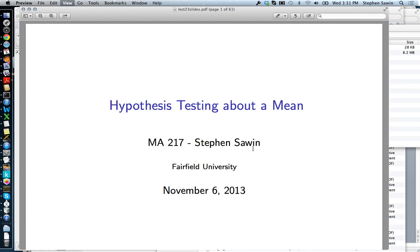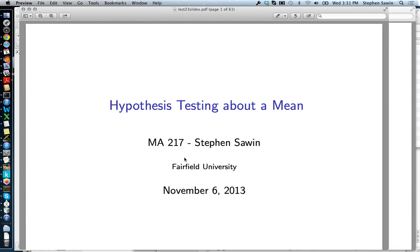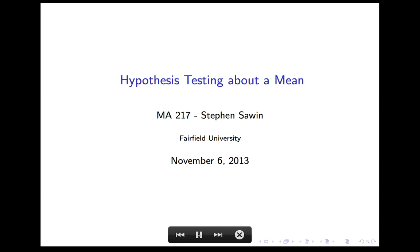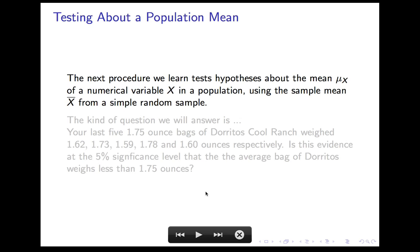Hypothesis testing about a mean. We've already learned how to test hypotheses about a proportion, so the logic here is going to be exactly the same. Calculations will be a little bit different. We're going to test hypotheses, claims, about the mean μ_X of a numerical variable X in a population using the sample mean x̄ and the sample standard deviation s from a simple random sample.